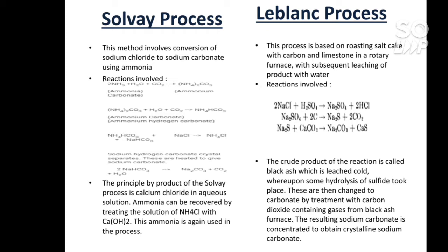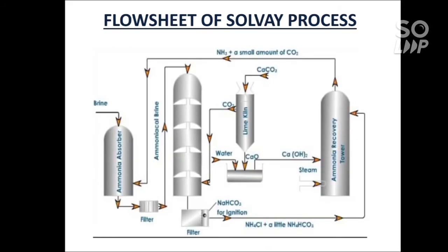These sulphides are then changed into carbonates. By treatment with carbon dioxide-containing gases from the black ash furnace, the resulting sodium carbonate is concentrated to obtain crystalline sodium carbonate. This is the flow sheet diagram of the Solvay process.